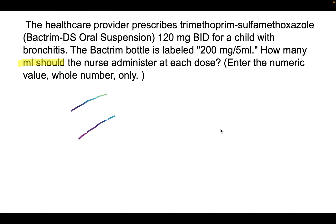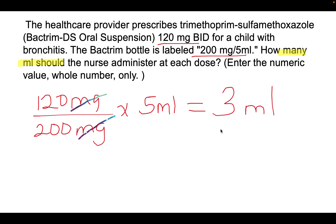The next question: the healthcare provider prescribes Bactrim 120 mg BID for a child with bronchitis. The Bactrim bottle is labeled 200 mg per 5 ml. How many ml should the nurse administer at each dose? We highlight 120 mg and 200 mg per 5 ml. Set up as what is required over what is available: 120 mg over 200 mg per 5 ml, then multiply by 5 ml. You get 3 ml. If you got 3 ml, you are correct.